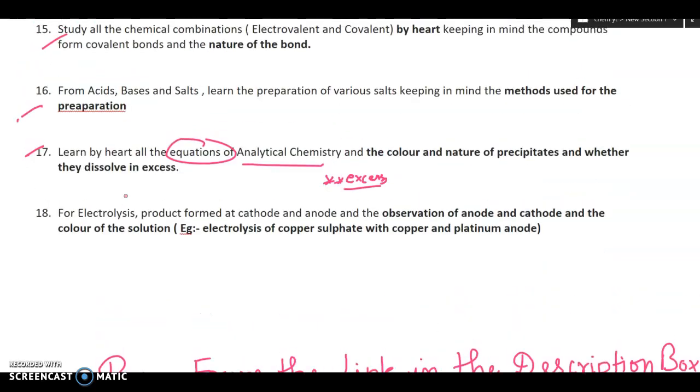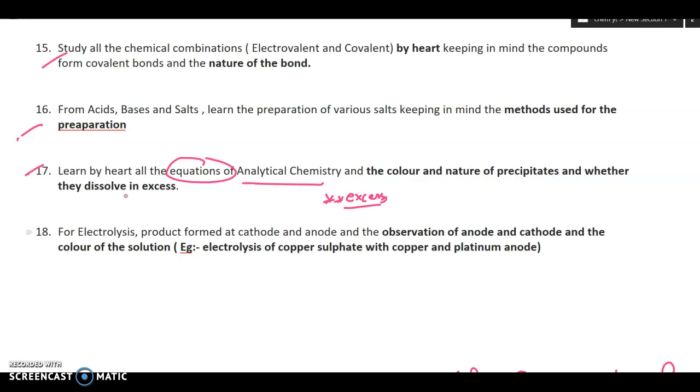For electrolysis, product formed at the cathode and anode, as I've told you earlier, the observation of anode and cathode and the color of the solution.